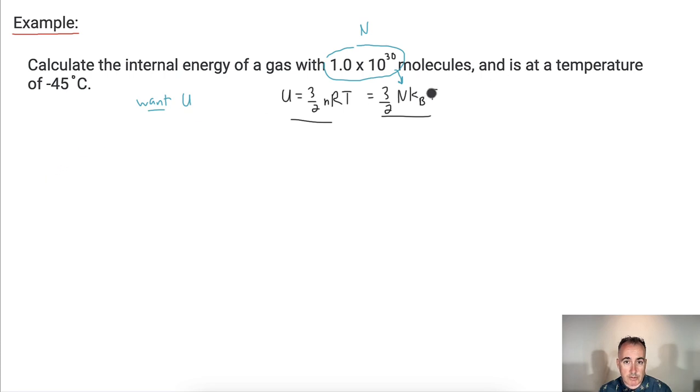We're also going to need to know the temperature. So we're going to use this three halves times N times kb times T version. We need temperature. We have the temperature in degrees Celsius, true, but we need it in Kelvin. So don't forget that. We're going to need to actually convert this.